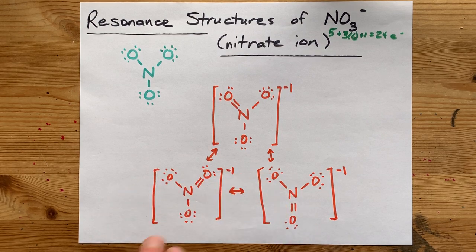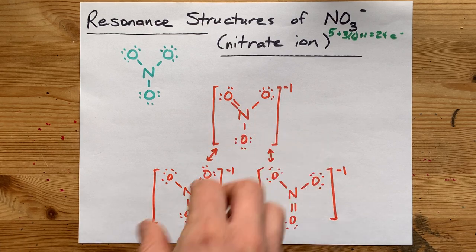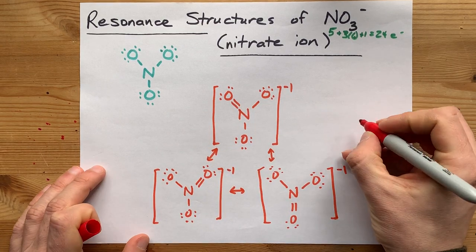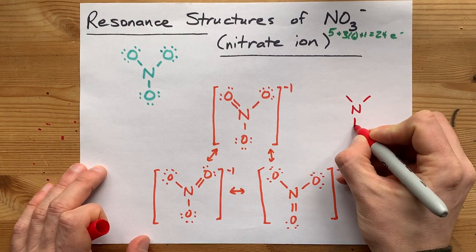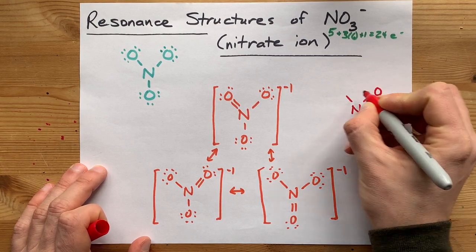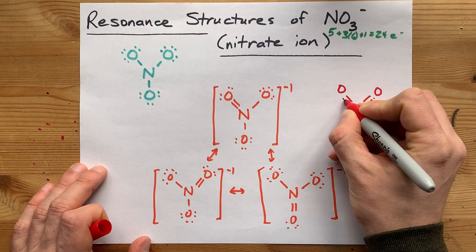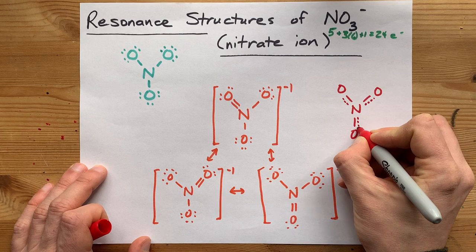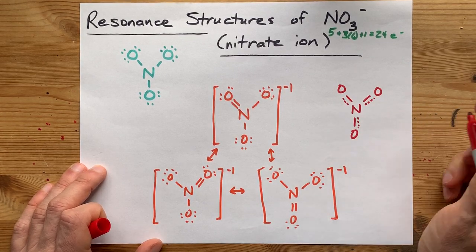So one other option for you is to draw what we call a hybrid resonance structure. It has the nitrogen in the center, and all of the bonds between oxygen are at least single at any particular moment. But then the double bond is actually possible among any of those three oxygens. So draw yourself a dashed line.